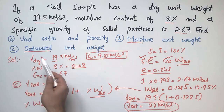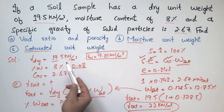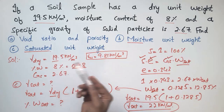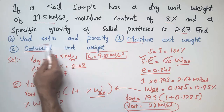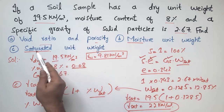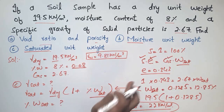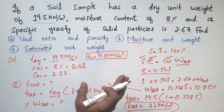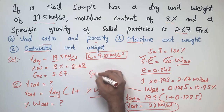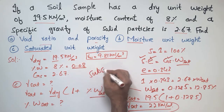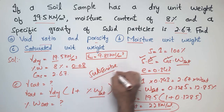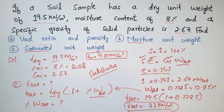Hope you guys understand how to find the unknown parameters of a soil sample when some known parameters are given. Using these relations, we found the void ratio, porosity, moisture unit weight, and saturated unit weight. Don't forget to subscribe to the channel for more civil engineering videos. Thank you for watching.